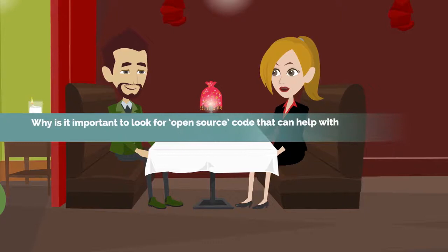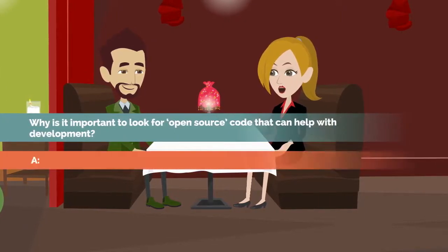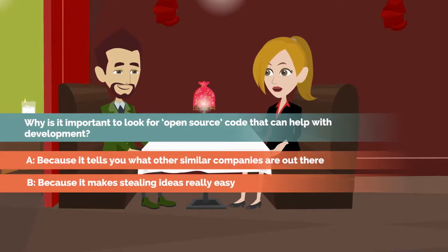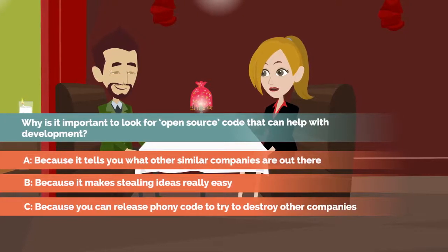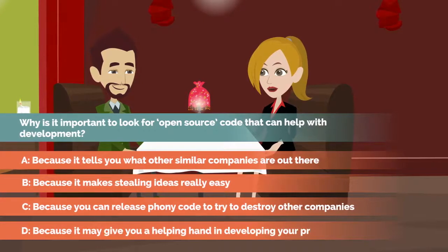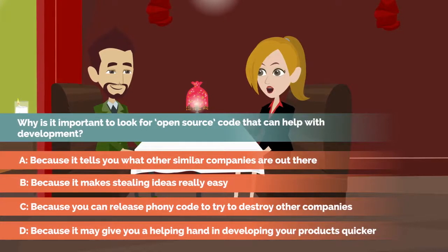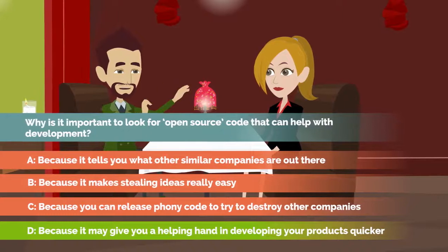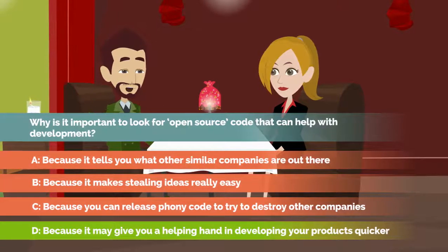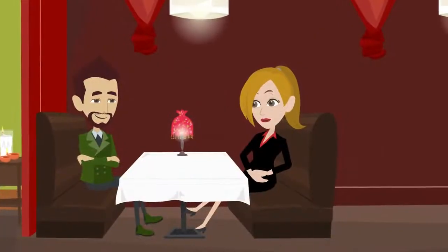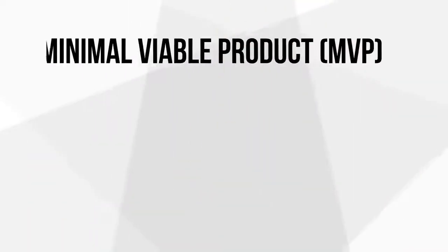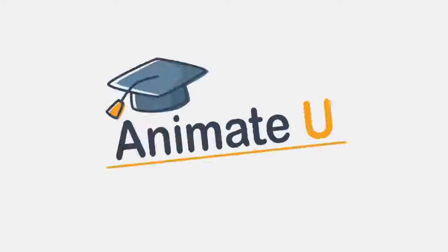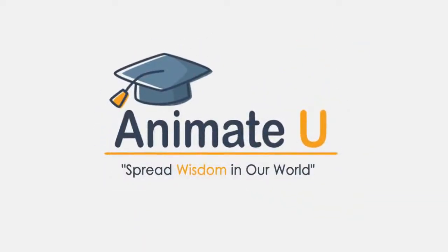Last one. Question 3: Why is it important to look for open source code that can help with development? A: Because it tells you what other similar companies are out there. B: Because it makes stealing ideas really easy. C: Because you can release phony code to try to destroy other companies. D: Because it may give you a helping hand in developing your products quicker. It's got to be D. People are really helpful in the tech world and want others to succeed. Open source code can give small companies a real boost in their early stages. You're getting good at this — you're absolutely right. Well done!